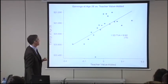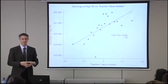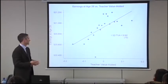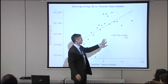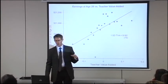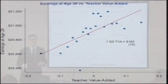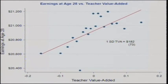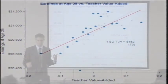This is the most important graph in the paper: earnings at age 28. One standard deviation of teacher value added gives you roughly $200 more in income per year at age 28. That may seem like a small amount of money, but it is not — that's $200 per child for an average of 28 children, and that's one year out of a lifetime. When we do that calculation for the present value of these increased future earning streams, it comes out to a large amount of money.